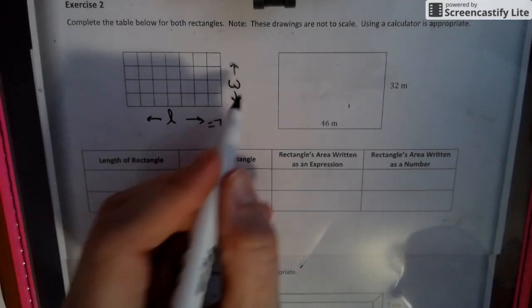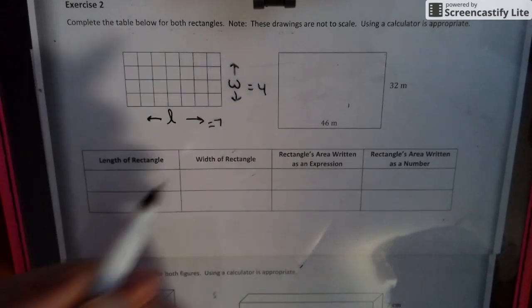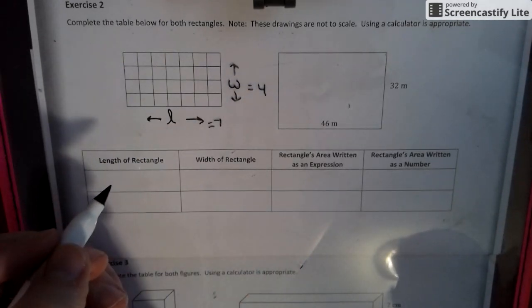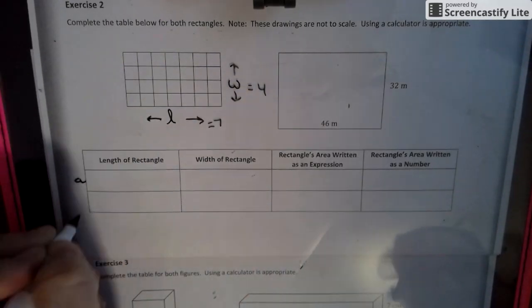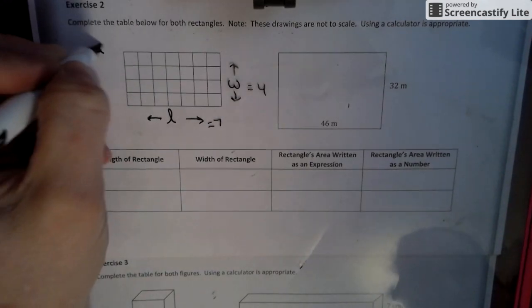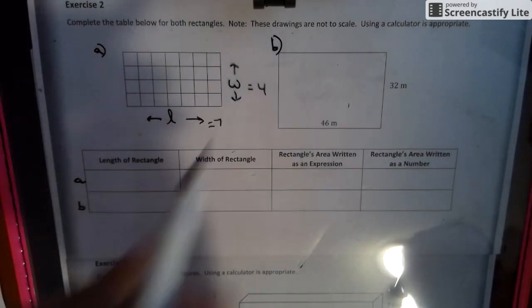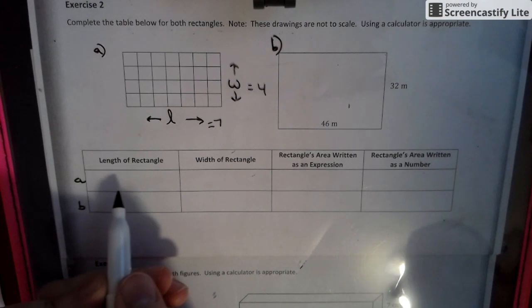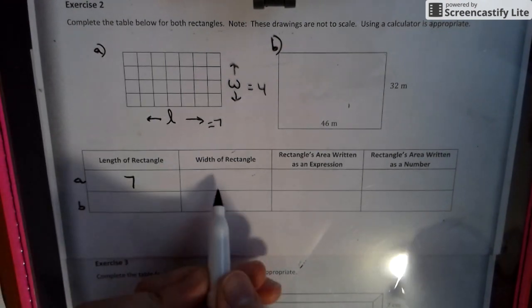Our width is four boxes. When we go down to the chart here, we'll call this A, we'll call this B. So we have our length, which is seven, and our width, which is four.